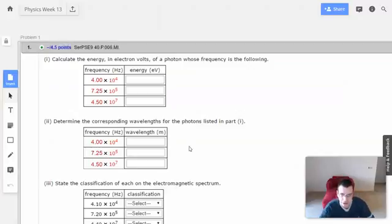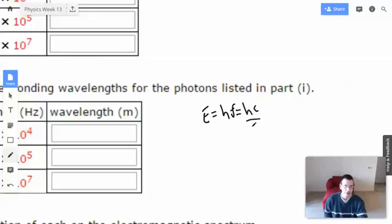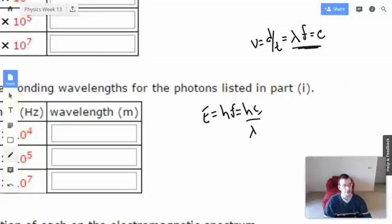Alright, so let's start this out. Let's write out a formula. We have E equals hf, where h is Planck's constant, and that equals hc over lambda. This is just the idea that velocity equals distance divided by time, which equals wavelength over frequency. So this relationship right here, I just rearranged things.